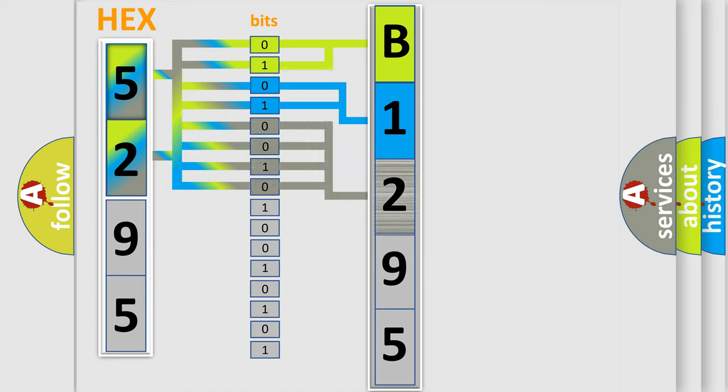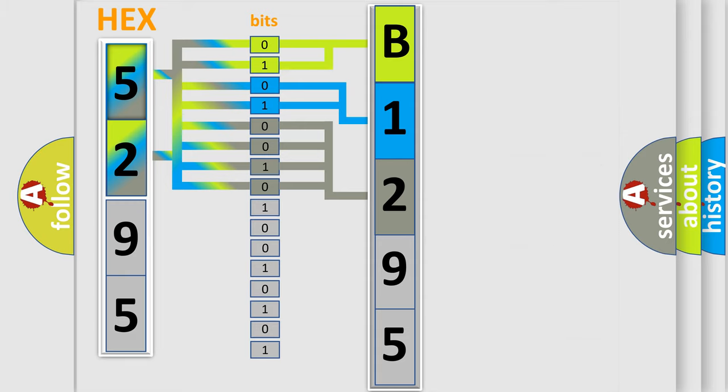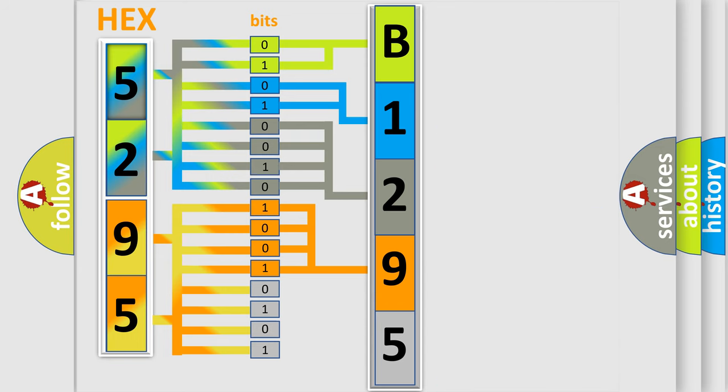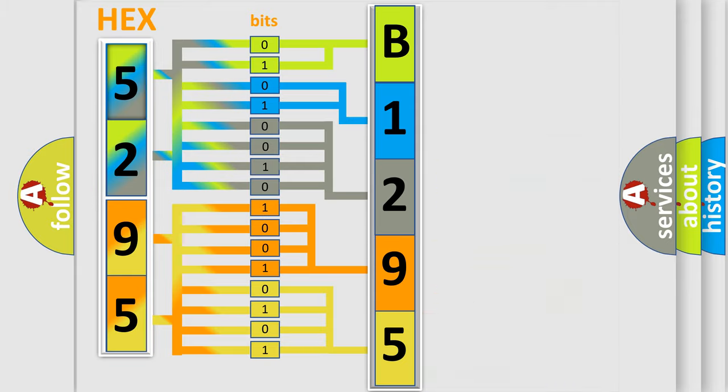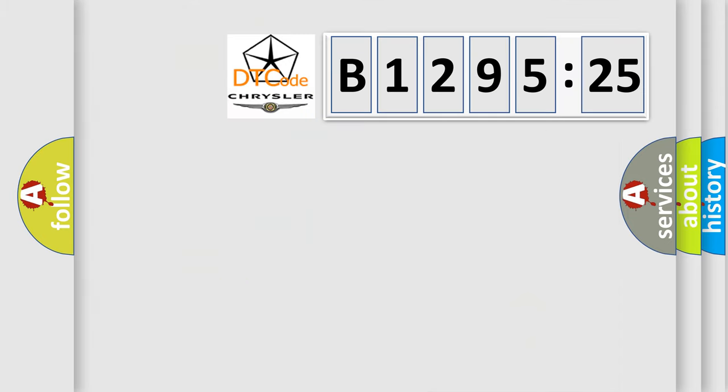A single byte conceals 256 possible combinations. We now know in what way the diagnostic tool translates the received information into a more comprehensible format. The number itself does not make sense to us if we cannot assign information about what it actually expresses. So, what does the diagnostic trouble code B129525 interpret specifically for Chrysler car manufacturers?